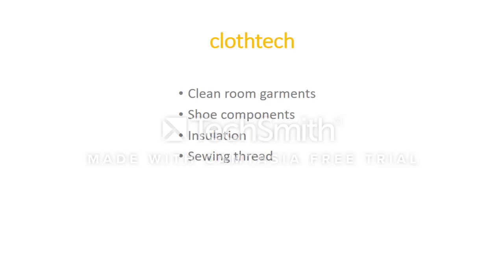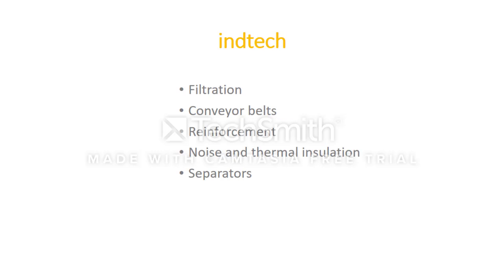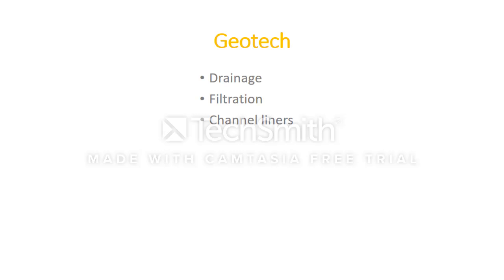In clothing technology, clean room garments and shoe components are used. If you can make a new type of shoe component, it may create huge demand in the market — showing just how interesting the technical textile field can be. Also, above insulation, sieving, and threads come under clothing technology. In industrial technology, filtration, satellite dishes, conveyor belts, reinforced plastics, noise absorbents, battery separators, and lifting and pulling equipment are covered. In geotextile, applications are on land — for example, drainage channel liners, filtration, offshore, and land reclamation.